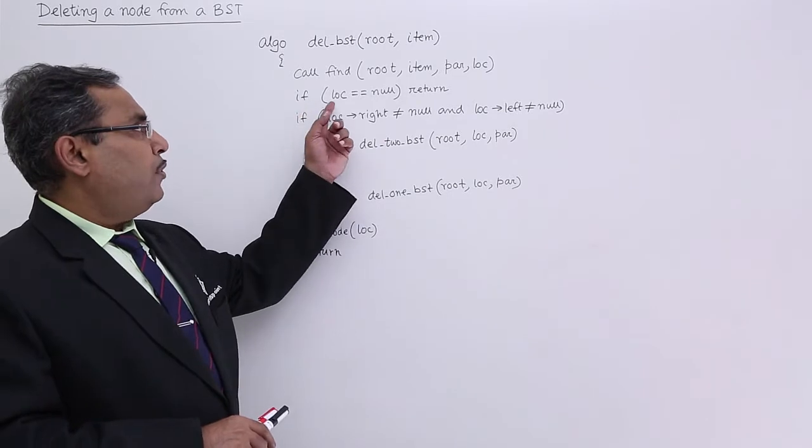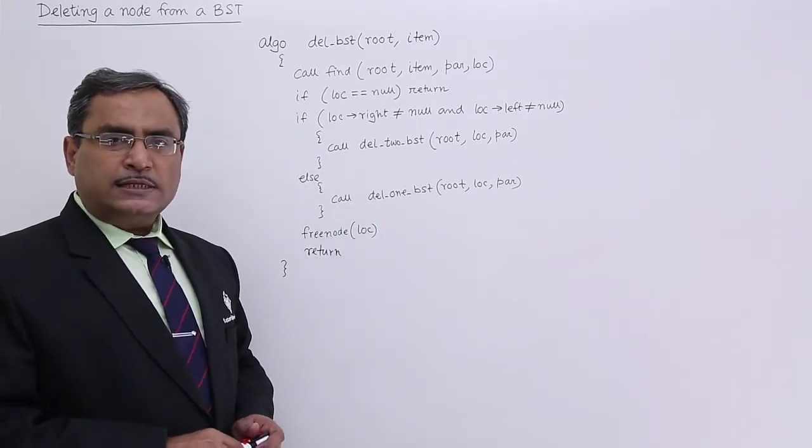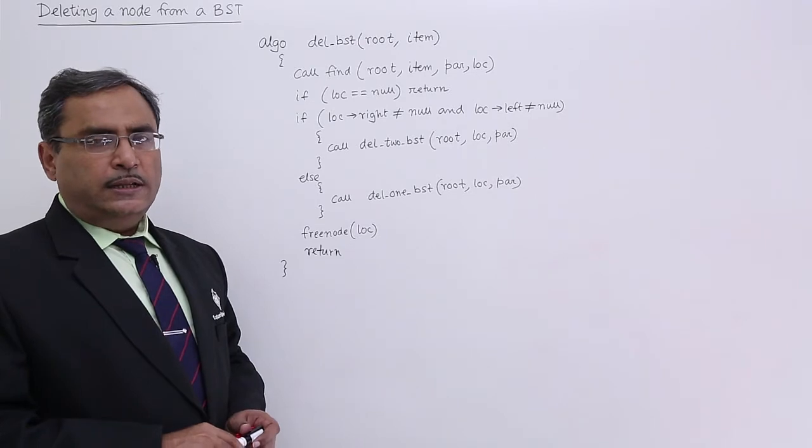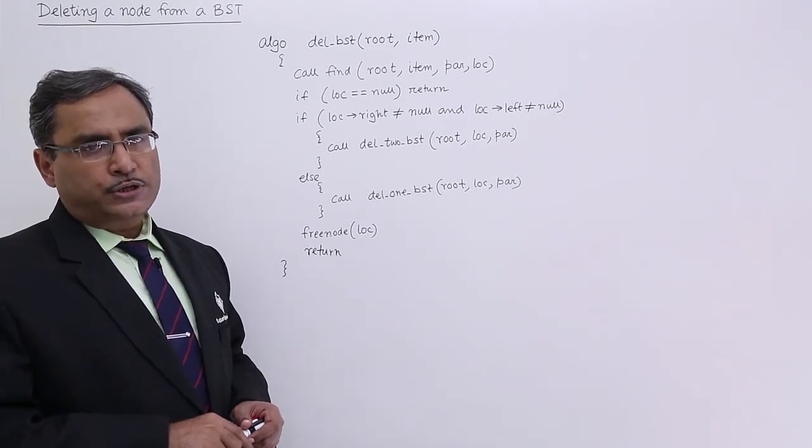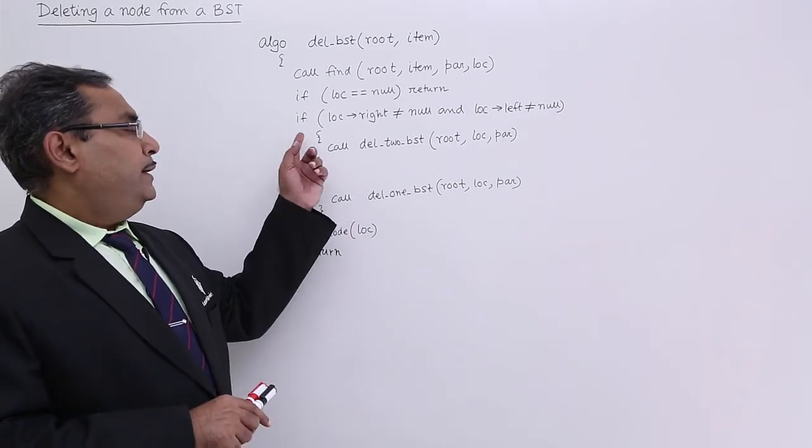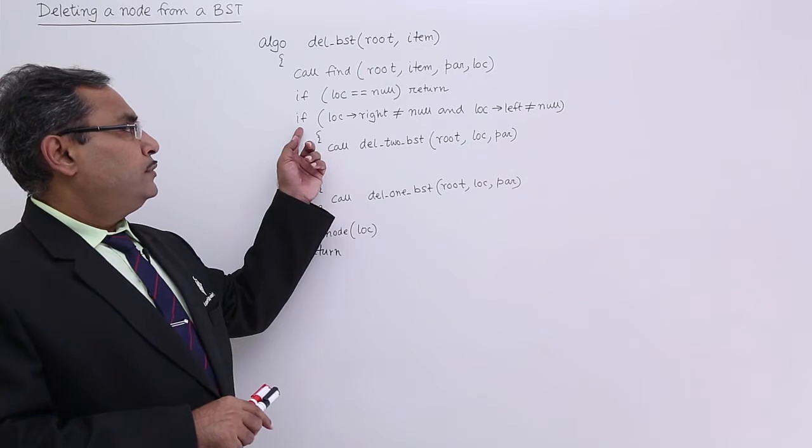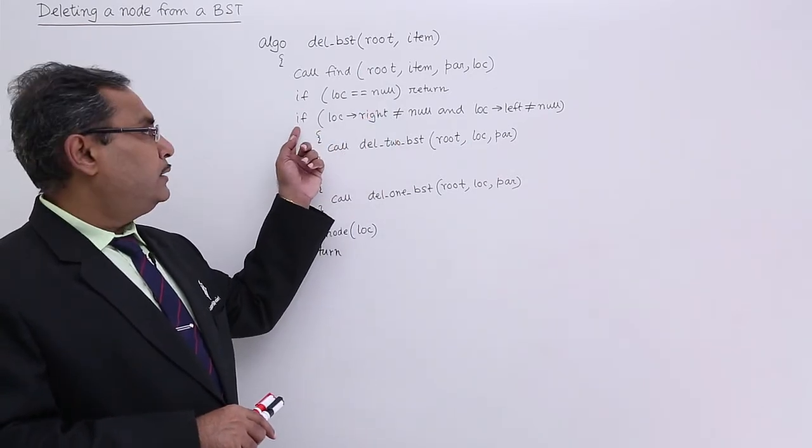Now if lock is equal to null that means if unsuccessful searching has taken place then there is no need to perform any deletion operation there is no scope. If it is not true then only the control will be coming here.